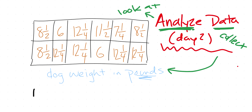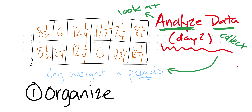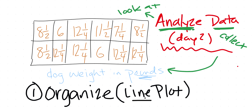One of the first things we want to do before analyzing the data is organize it, and we're going to do that using a line plot. A line plot is literally a number line that has things plotted onto it. We're going to need a title — 'Dog Weights' — and then we need to build the number line by analyzing our data. Let's go to page two.